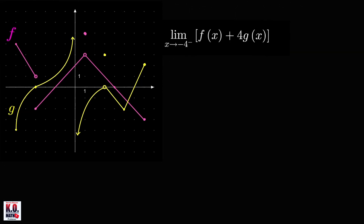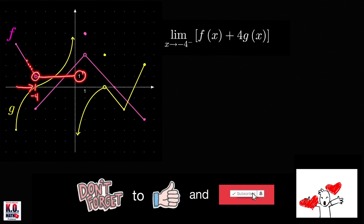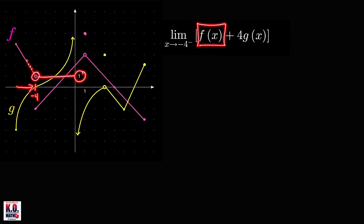First, let us find the limit of this sum as x approaches negative 4 from the left. So this is our negative 4. If we look at the graph of f as x approaches negative 4 from the left, the points on the graph of f get closer and closer to this point, and the y value of this point is equal to 1. Therefore, the limit of f as x approaches negative 4 from the left is equal to 1.